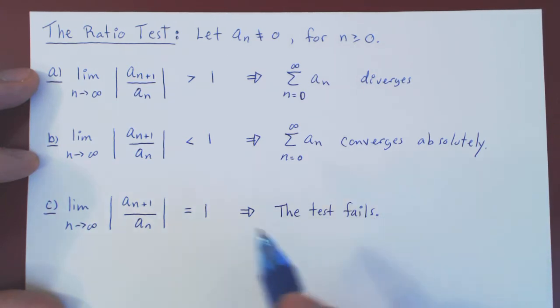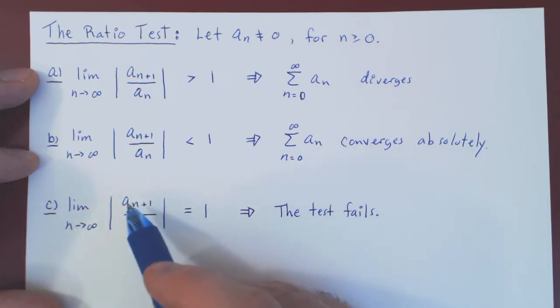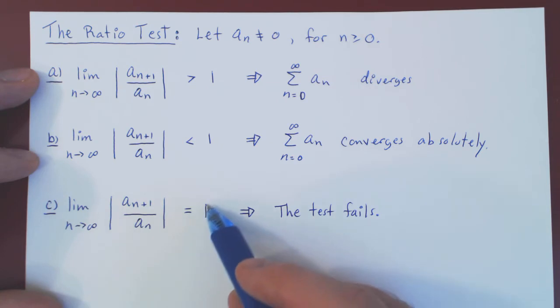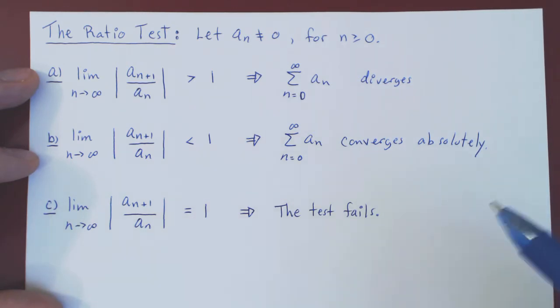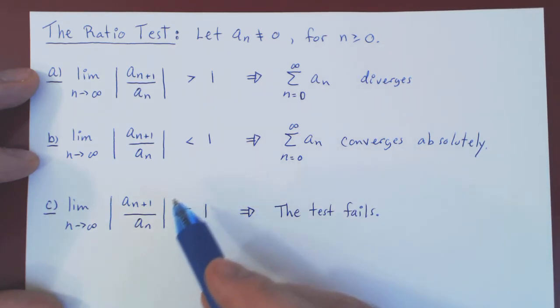Which means that when in the limit the absolute value of an+1 over an is equal to 1 as n tends to infinity, the series of an may either converge or diverge. When the ratio in the limit equals 1, anything goes.